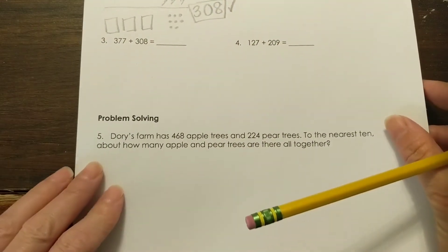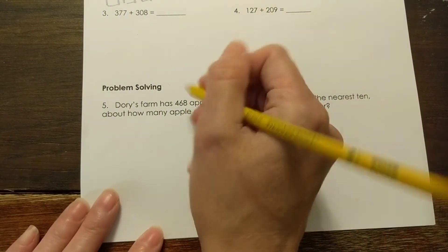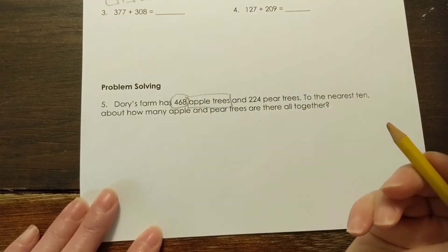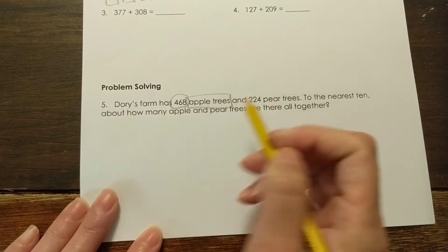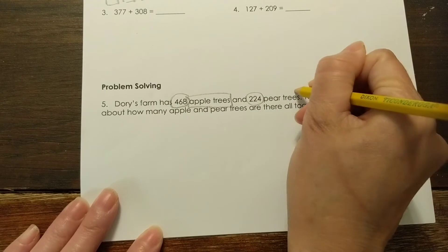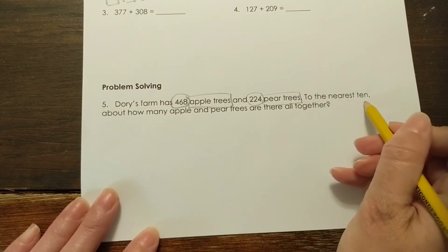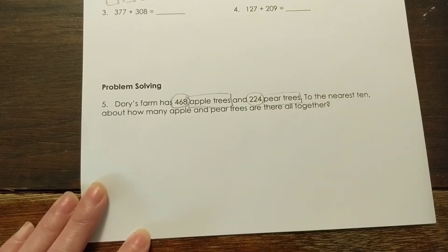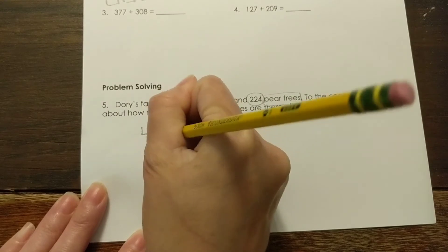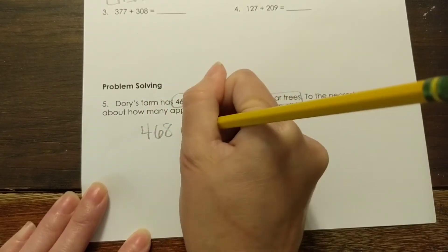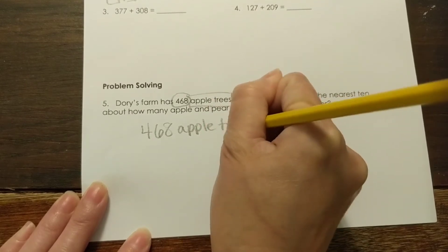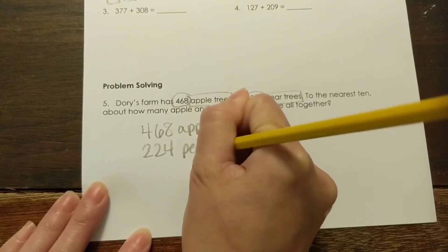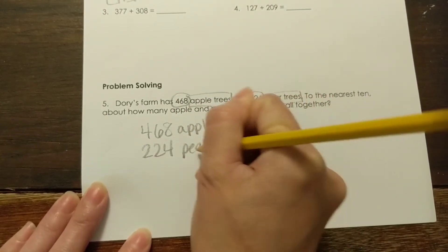Alright. So we're going to go to this word problem. Dory's Farm has 468 apple trees. So doing the cubes method, we circle our numbers. We box important words. And 224 pear trees. To the nearest 10, about how many apple and pear trees are there all together? So what we need to do is write what we know. So we know that there are 468 apple trees and 224 pear trees.